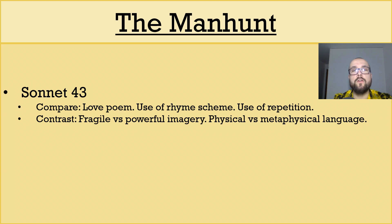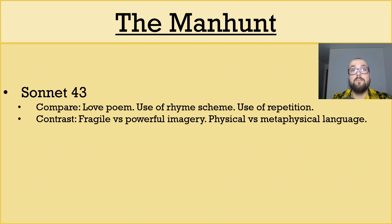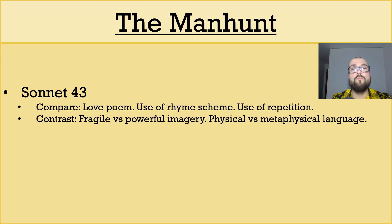Furthermore, the repetition of 'and' in The Manhunt creates a list-like effect, suggesting that the process of putting Eddie back together again is long and arduous, whereas the repetition of 'I love thee' in Sonnet 43 is near-obsessive and suggests that Elizabeth's love for Robert is never-ending. You could also contrast these poems, looking at how there are images of weakness, destruction and fragility in The Manhunt, whereas there are stronger, more whole and complete images in Sonnet 43, such as the reference to the sun. The Manhunt also features very tangible, concrete, physical language, whereas Sonnet 43 is more metaphysical, mentioning souls, the ends of being and faith.